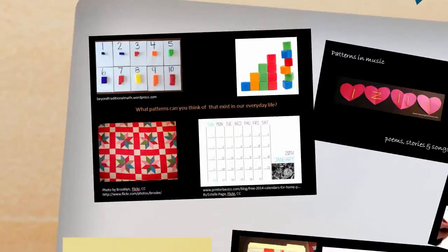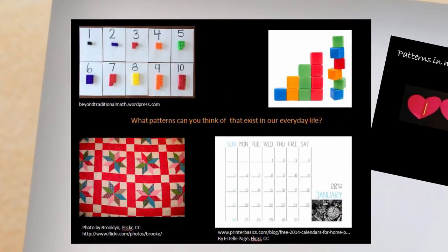In the early years, children begin to recognize patterns through guided play or by exploring patterns in their everyday life or objects. For example, there's patterns in quilt covers, daily routines or number sequences. Can you think of some patterns that exist in our everyday life?